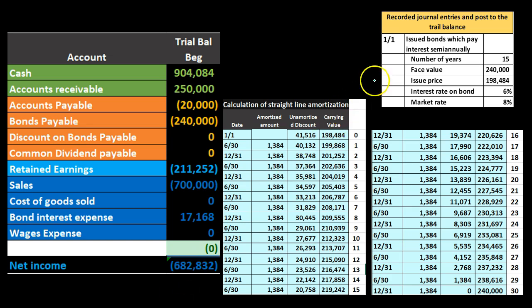For example, if we had a bond with a face amount of $240,000 and an issue price of $198,484 — 15-year bonds, semi-annual — when we put this on the books we would record cash for the $198,484, the bond payable at $240,000, and then a discount. Over the life of the bond we would be paying interest — that's 30 semi-annual payments — and also amortizing out the discount to interest expense.